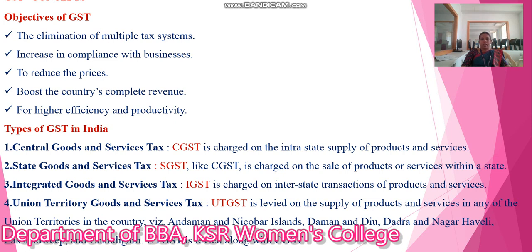Union territories include places like Daman and Diu, and Lakshadweep, Chandigarh, etc.